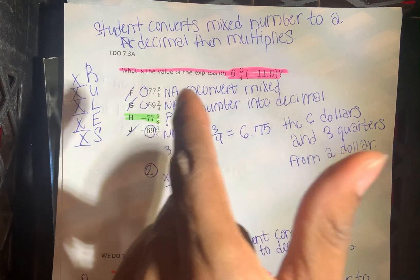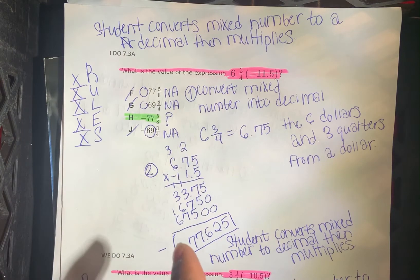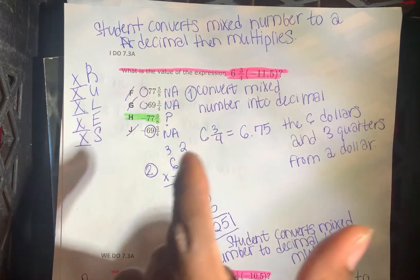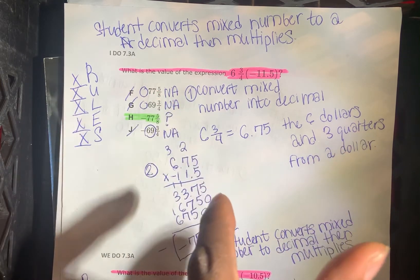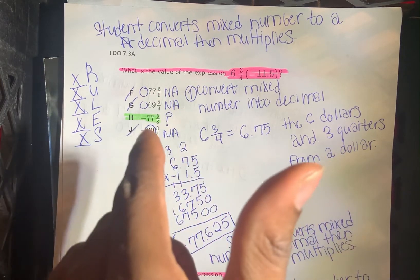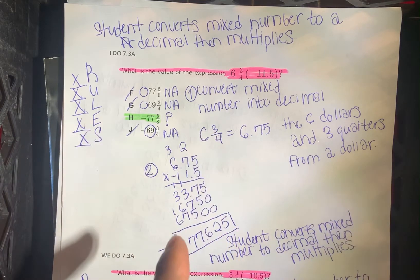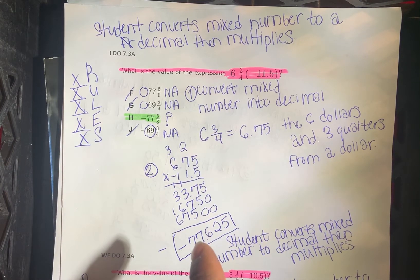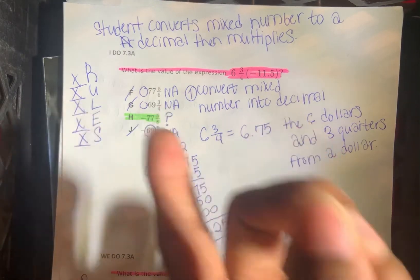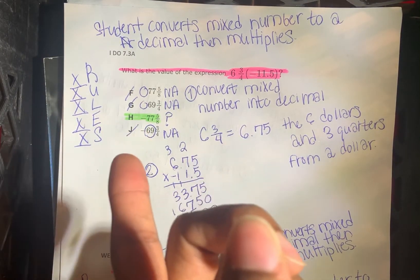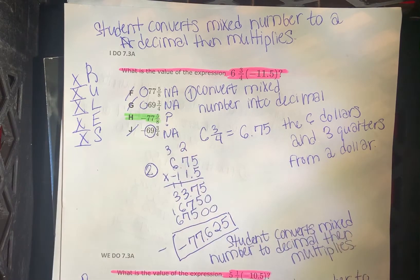It can't be 77 and 5 eighths because it has to be negative. When you multiply a negative number by a positive number, the answer has to be negative. So you can cross off F and G because those are both positive. Let's look at J. J is negative 69 and 3 quarters, but that's too small. It's at least negative 77. So the answer is negative 77 and 5 eighths. The answer is H.